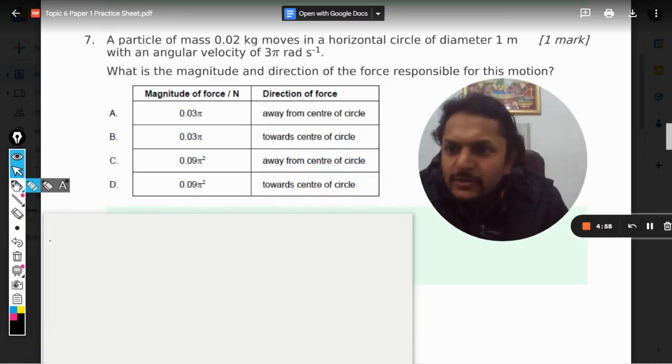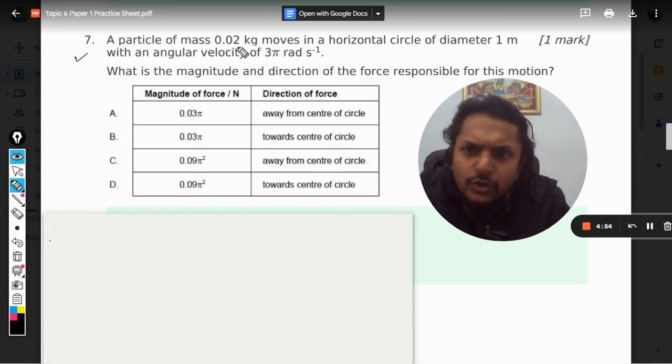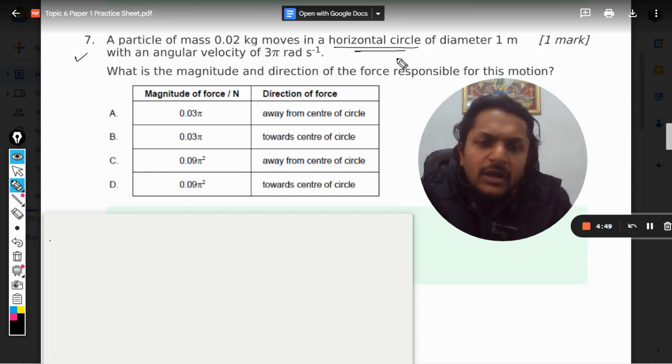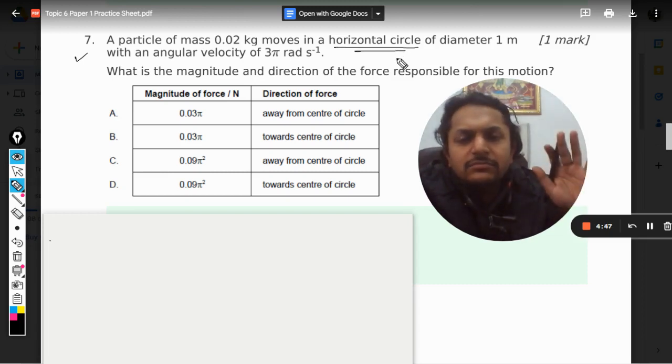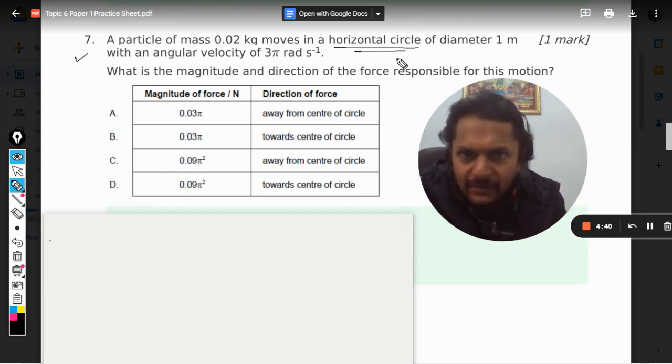Okay dear students, let us see how to do this question. A particle of mass 0.02 kg moves in a horizontal circle. Whenever there is this thing written in the question that it is a horizontal circle, it means that we need not care for the gravity that is acting. So you can just assume that there is no gravity.